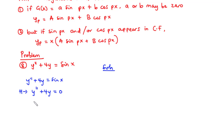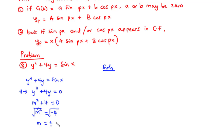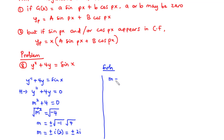We derive the auxiliary or characteristic equation from the differential equation, so we have m² + 4 = 0. We can transpose 4 to the right-hand side to get m² = -4, then take the square root of both sides. We represent this as the square root of -1 times the square root of 4, giving m = ±2i.